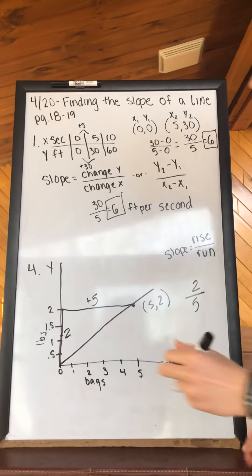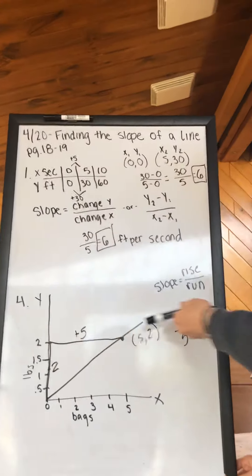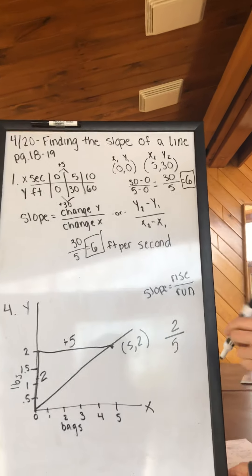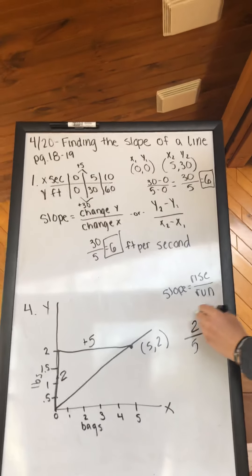So our slope is our rise number, which is 2, over our run number, which is 5. Going up is positive. Going to the right is positive. So our slope for number 4 is 2 over 5.